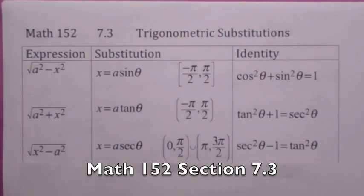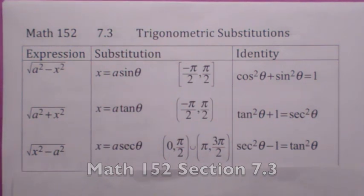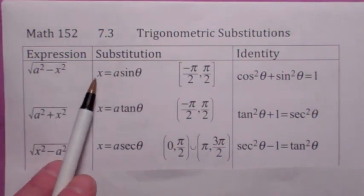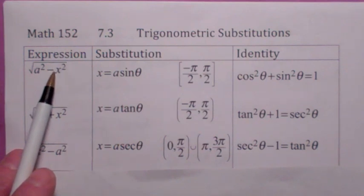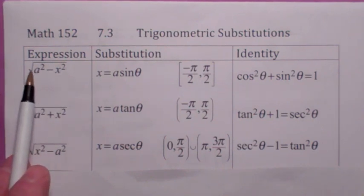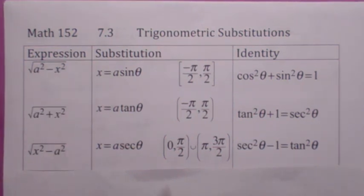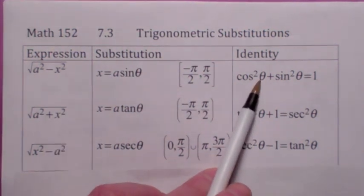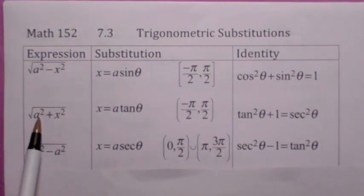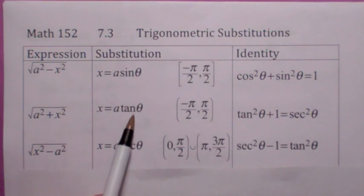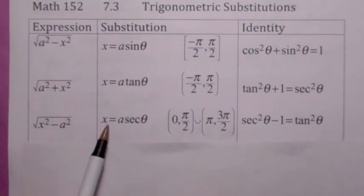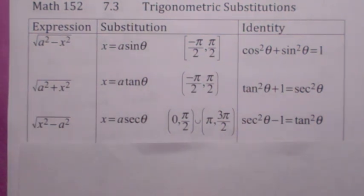In this section we're going to talk about trigonometric substitutions. There are three main ones. If you have an expression of the form a squared minus x squared, you let x equal a sine theta. When you plug that in, you get a square root of a squared minus a squared sine squared theta, which lets you eliminate the square root using the trig identity cosine squared plus sine squared equals one. If you have a squared plus x squared, use x equals a tangent. And if you have x squared minus a squared, use x equals a secant. In each case, you should be able to get rid of the square roots.